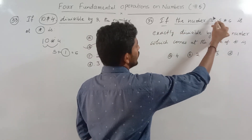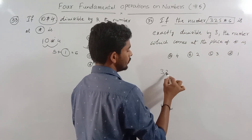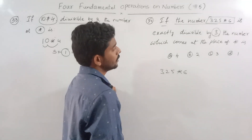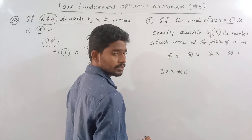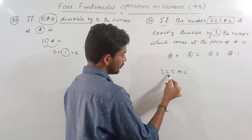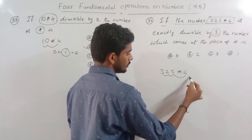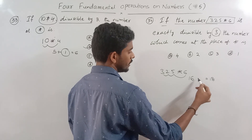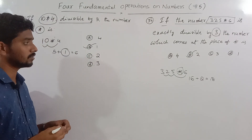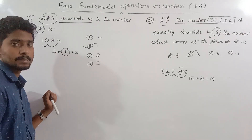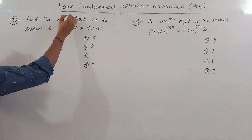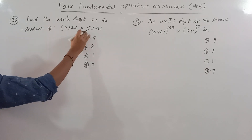If the number 3, 2, 5, star, 6 is exactly divisible by 3, find the star. Using the divisibility rule for 3 — sum of digits: 3 plus 2 is 5, 5 plus 5 is 10, 10 plus 6 is 16. We need the next multiple of 3 above 16, which is 18, so the star equals 2.